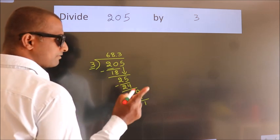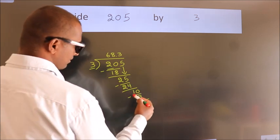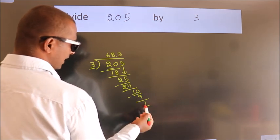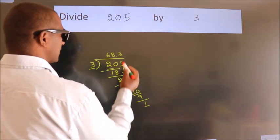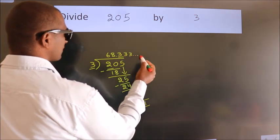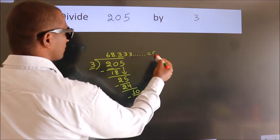Now you observe. We had 1 here and we got 1 again. That means this number keeps on repeating. So this is our standard quotient.